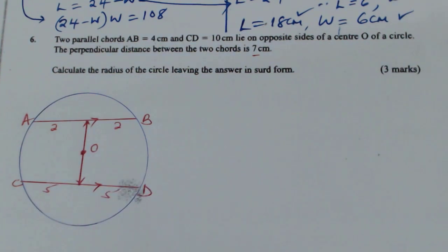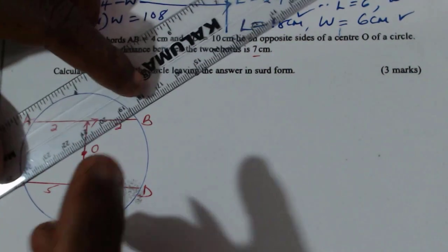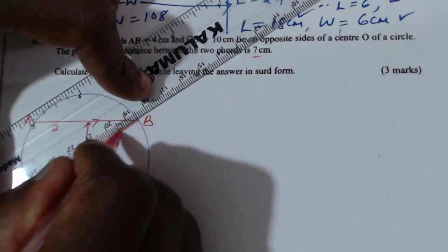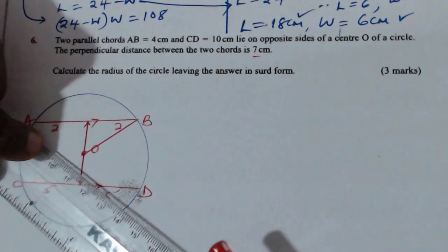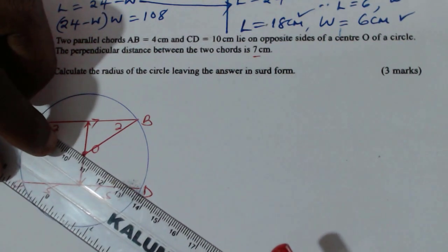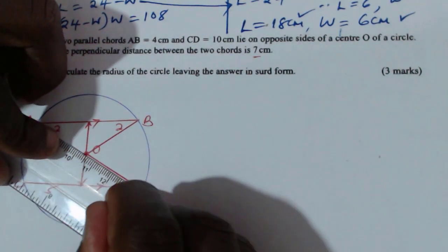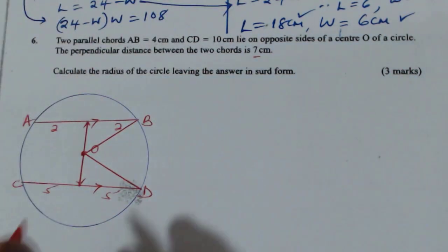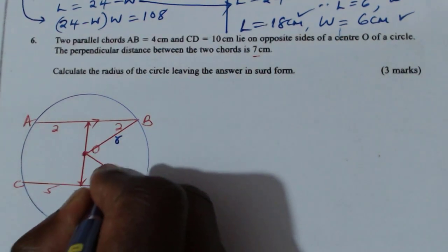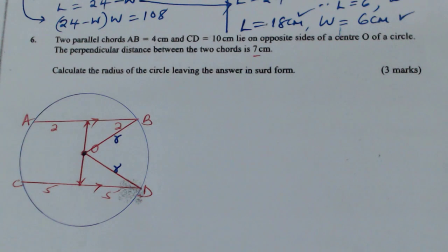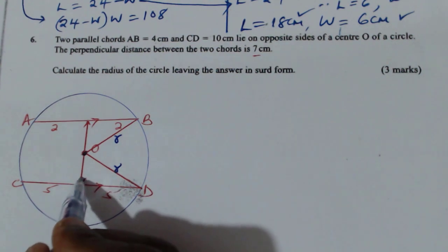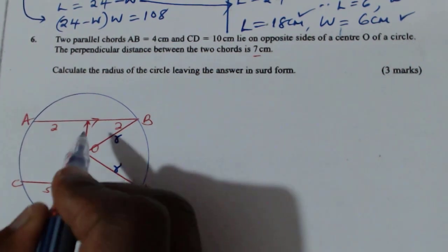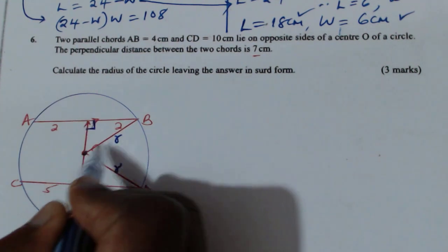Now from there, to get the radius, I will draw a radius there and then I will draw another radius there. So these are the two possible radii. I will let this one be given by R — that is the radius. And this one is also the radius. This is the center. When you look at these, these are two right-angle triangles, one here and another one here.